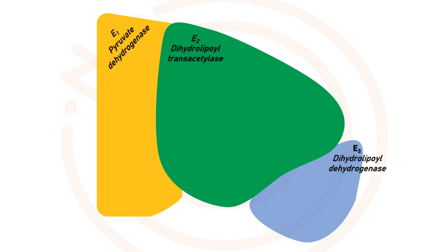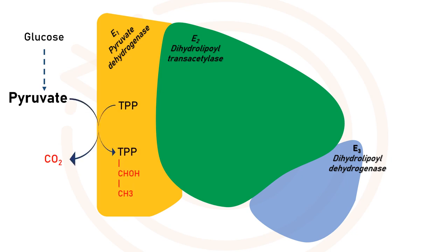The pyruvate dehydrogenase complex carries out five consecutive reactions in the decarboxylation and dehydrogenation of pyruvate. In the first reaction, pyruvate reacts with the bound thiamine pyrophosphate of pyruvate dehydrogenase, undergoing decarboxylation to form the hydroxyethyl derivative of thiamine pyrophosphate. In the second reaction, pyruvate dehydrogenase transfers two electrons and the acetyl group from thiamine pyrophosphate to the oxidized lipoyl group of dihydrolipoyl transacetylase, forming the acetyl thioester lipoyl intermediate.